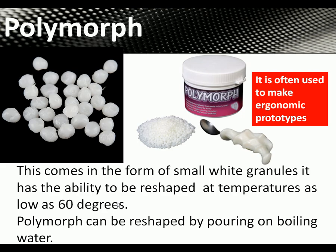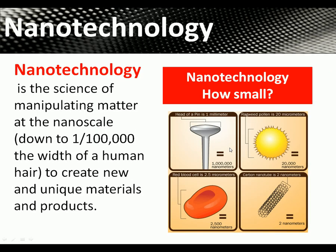Polymorph has the ability to be reshaped at temperatures as low as 60 degrees. Just pour boiling water over it and it becomes easy to shape, then it hardens when it cools into a tough plastic. It can be used to make ergonomic prototypes, like a spoon handle, quite easily.